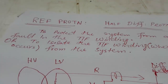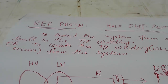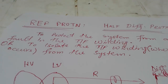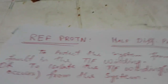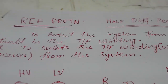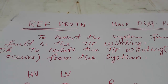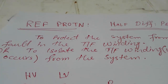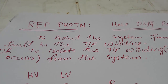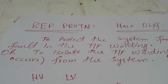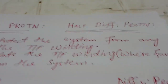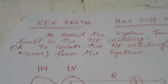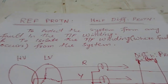Today we will study about restricted earth fault protection — what is restricted earth fault protection, how it works, the schematic diagram, and then measurement and practical from the relay. The restricted earth fault protection scheme is used to protect the system from any fault in the transformer winding.